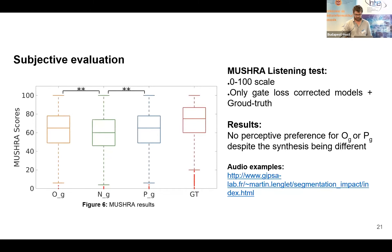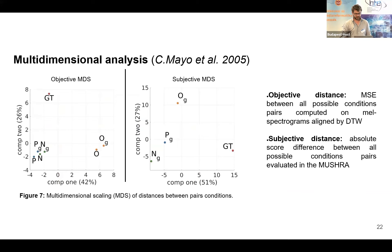We conducted an online MUSHRA evaluation where listeners rated between 0 and 100 the examples for each model. We found that listeners did not have a general preference for O or P, but N was significantly less appreciated than the other two models. Evaluating voice quality is a tricky question since several parameters may be taken into account, such as intelligibility, spectral smoothness, or expressiveness. This is why we used a multidimensional approach to gain insight on the underlying parameters evaluated by listeners, inspired by the work of Mayo and colleagues in 2005.